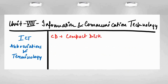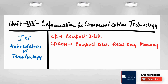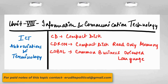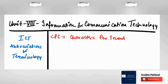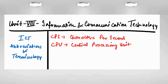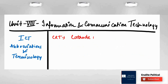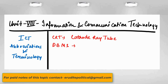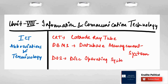Next is CD — Compact Disc. Then CD-ROM — Compact Disc Read-Only Memory. Next is COBOL — Common Business Oriented Language. Next is CPS — Characters Per Second. Next is CPU — Central Processing Unit. Next is CROM — Control Read-Only Memory. Then CRT — Cathode Ray Tube. Then DBMS — Database Management System. Next is DOS — Disk Operating System.